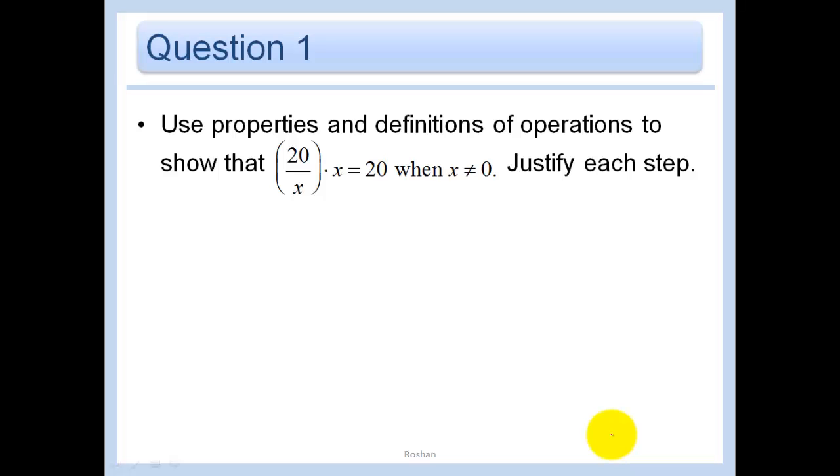The first question here that we're going to do is use properties and definitions of operations to show that 20 divided by X times X equals 20 when X does not equal zero. I need to say that when X does not equal zero because thou shalt not divide by zero ever, and justify each step. We start with the left side of our equation and see how we can make it into the right side. 20 divided by X times X can be rewritten as 20 times 1 over X times X. We just rewrote the 20 divided by X as 20 times 1 over X, which is just the definition of division.